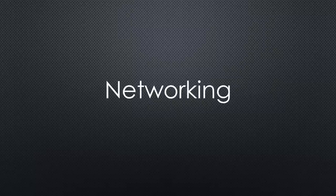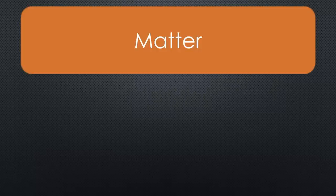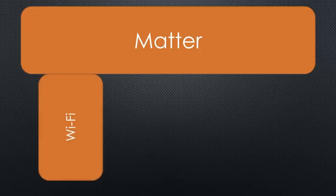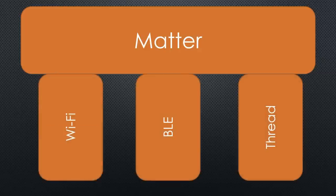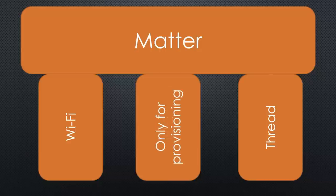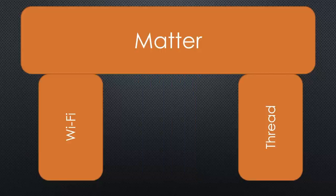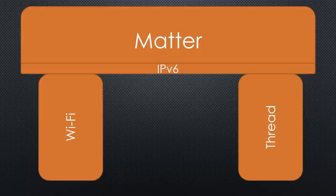Anyway, let's continue with the next level: networking. Matter currently supports Wi-Fi, BLE, and Thread. BLE is only used for provisioning the devices, not for interaction. So we have two very different protocols available. But if you believe the glossy leaflets, they all work with IPv6 — we will later see that this is not entirely true.